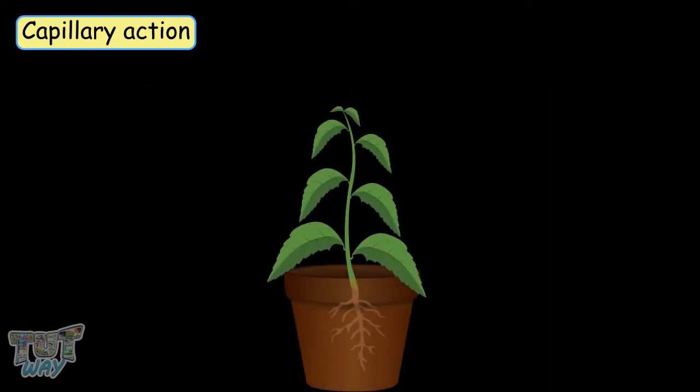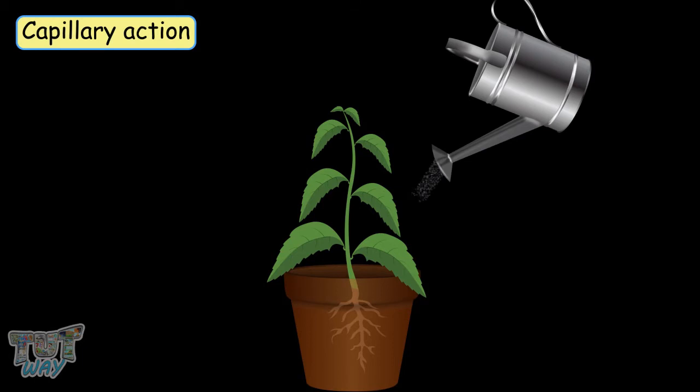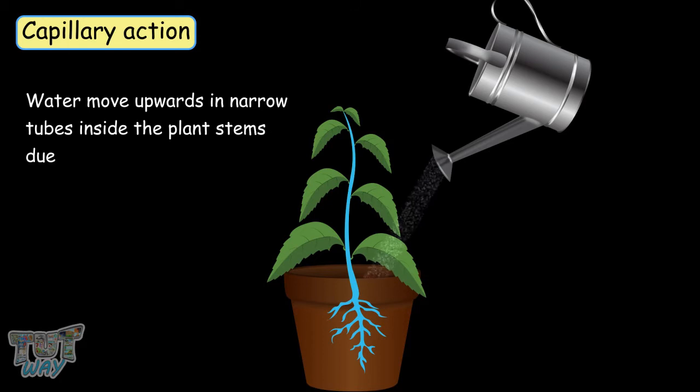Have you ever wondered how water that we add to the roots of the plants reaches the topmost part of the plants? It is due to capillary action that lets the water move upwards in narrow tubes inside the plant's stems.